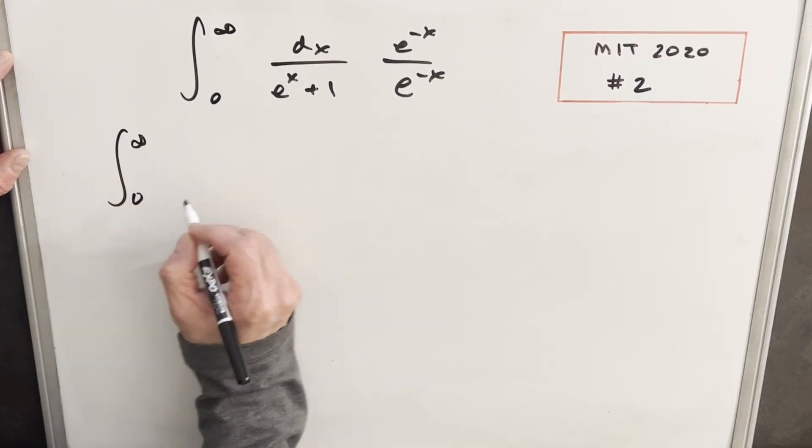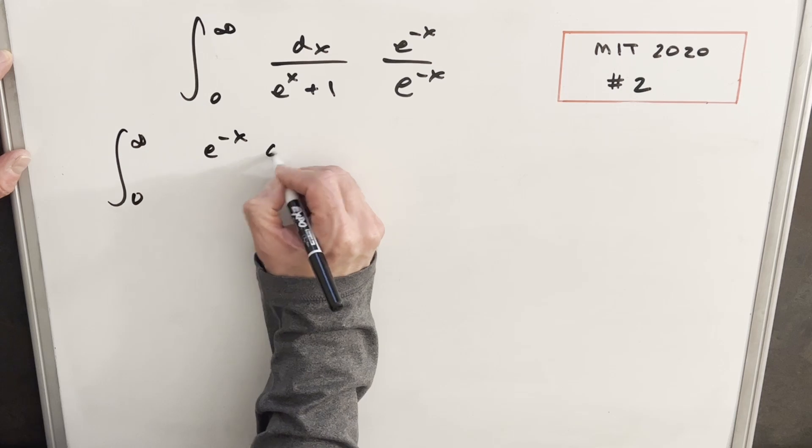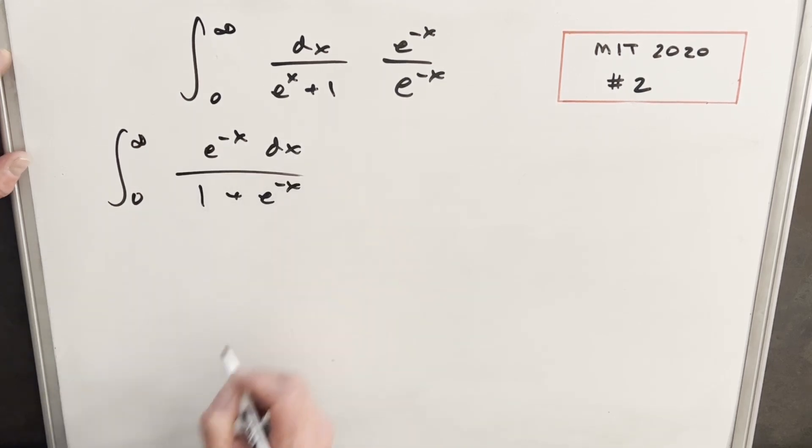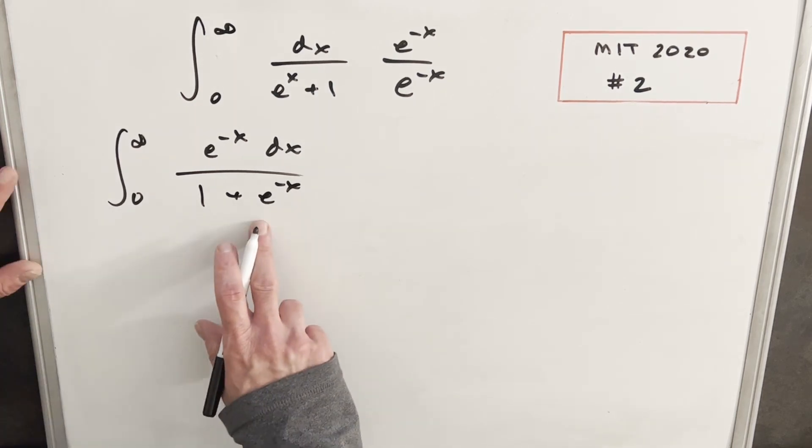Then when we multiply that in, we're just going to have, now we have created our e to the minus x in the numerator. Then we'll have a one plus e to the minus x here. And now we're set up pretty nice for a u substitution.